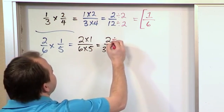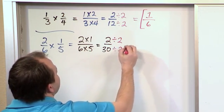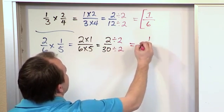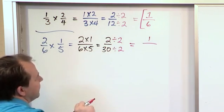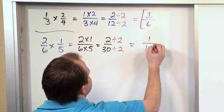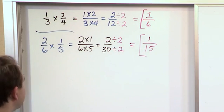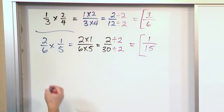Both of these are even numbers, so I divide by 2 on the top and 2 on the bottom. 2 divided by 2 is 1. And 30 divided by 2, if you think about it, is actually 15. Because 15 times 2 is actually 30. And so the answer is 1/15.